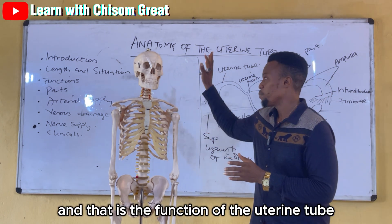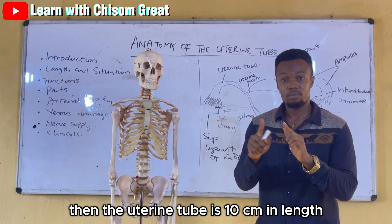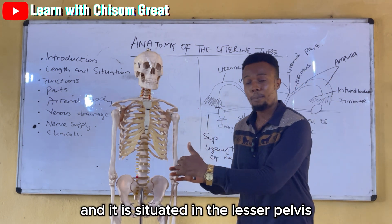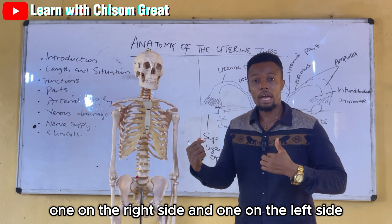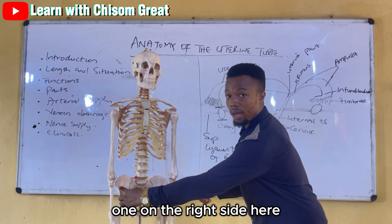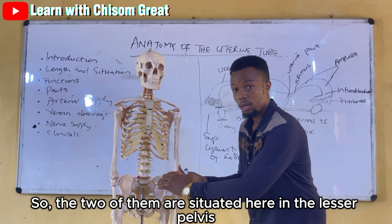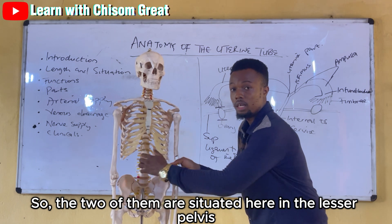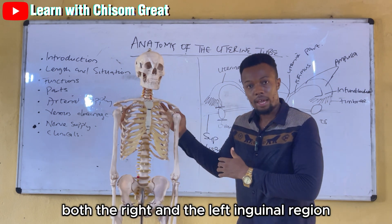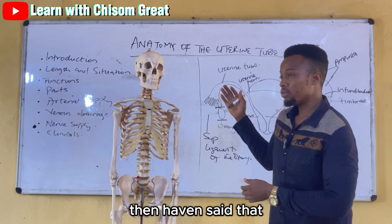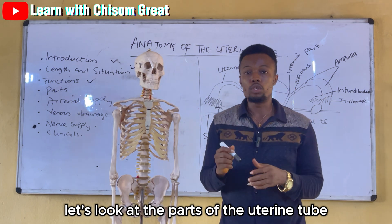That is the function of the uterine tube. The uterine tube is 10 cm in length and is situated in the lesser pelvis. There are two uterine tubes in the female — one on the right side and one on the left side. Both of them are situated in the lesser pelvis, or the inguinal region.